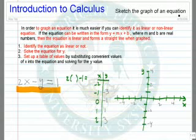We now want to sketch the graph of an equation. In order to do this, it's much easier if you can identify it as linear or non-linear. If we can write in the form y equals mx plus b, where m and b are real numbers, then the equation is linear and forms a straight line when graphed.